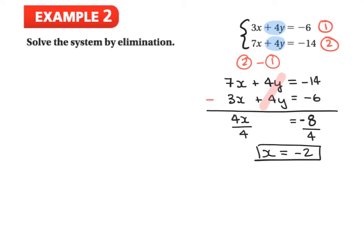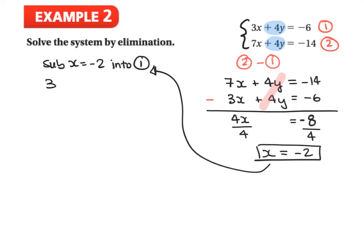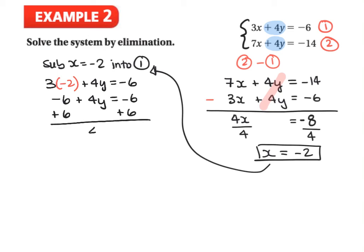We substitute x equals negative 2 into equation 1, choosing it because multiplying by 3 is simpler than by 7. So 3 times negative 2 plus 4y equals negative 6, giving negative 6 plus 4y equals negative 6. Adding 6 to both sides gives 4y equals 0, and dividing by 4 gives y equals 0. The ordered pair is (-2, 0).